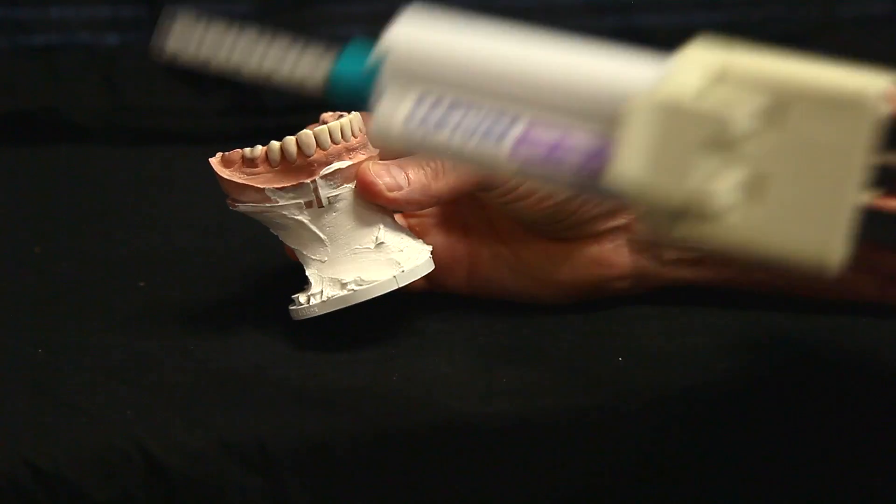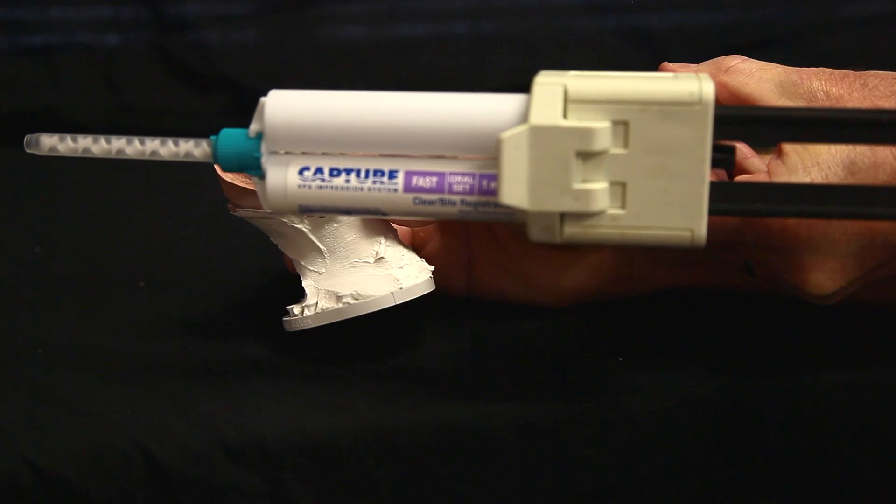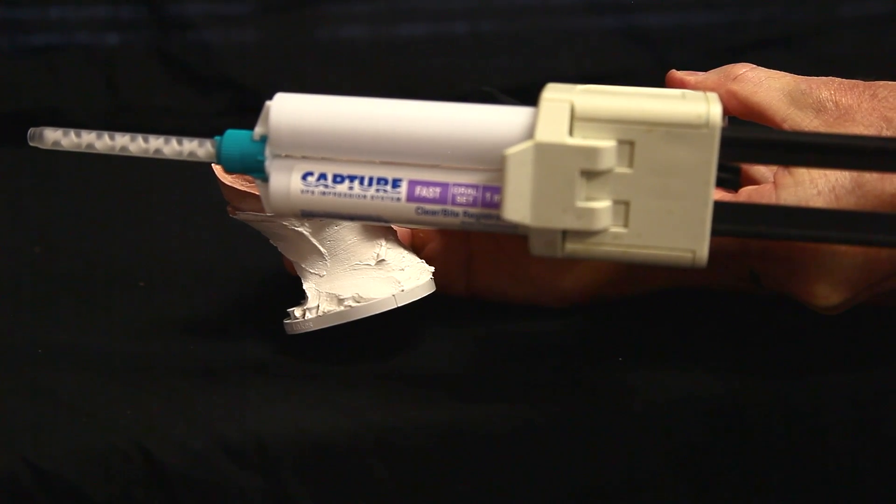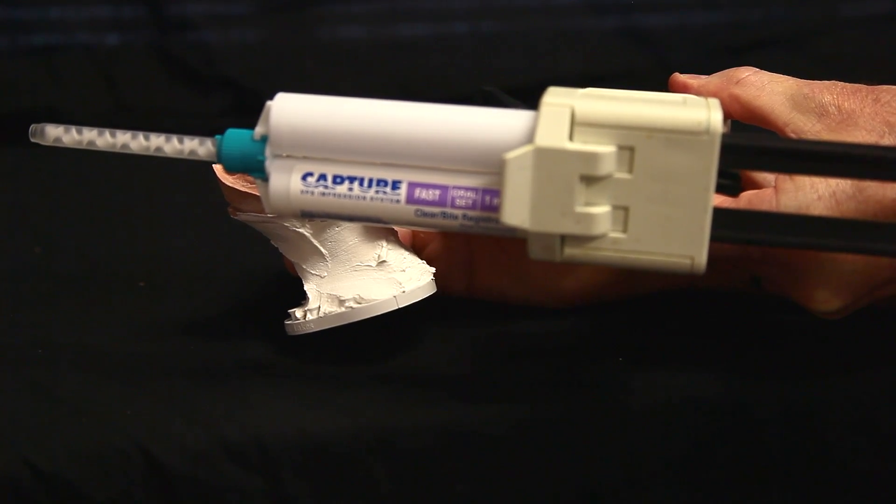One of the materials we're going to be using is a material called Capture. You can get this at Glidewell. It's a clear polyvinyl, so let's go ahead and make one.